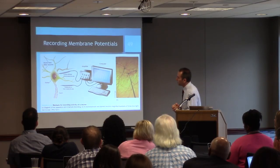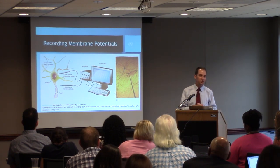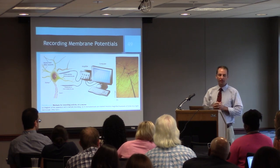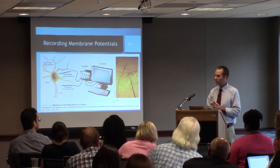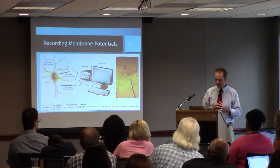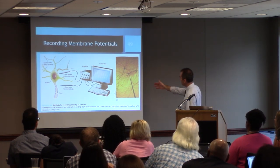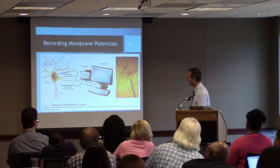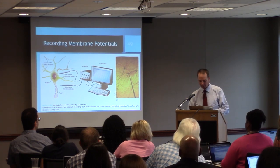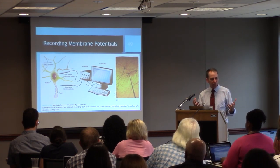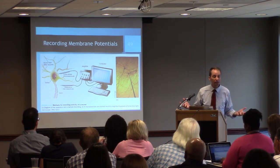We can measure the electrical activity of neurons by placing a very tiny electrode just inside the membrane. We can amplify those electrical signals on a computer and observe electrical changes over time in neurons. Here's an actual microelectrode approaching the cell body of a neuron — you can pierce the membrane. We find that at rest, the inside of a neuron is negative relative to the outside.